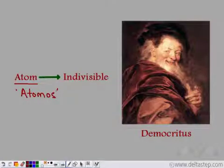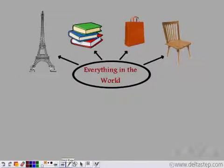So everything in the world, from a tall Eiffel Tower to books to chairs to tables — everything that you see around you is made up of atoms.